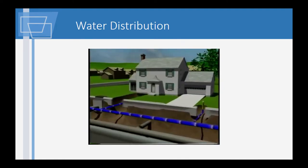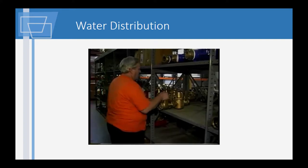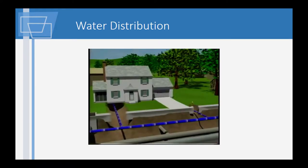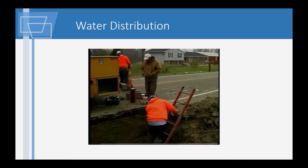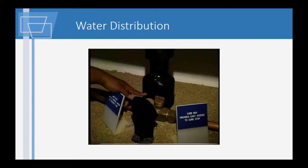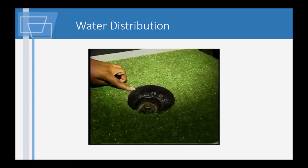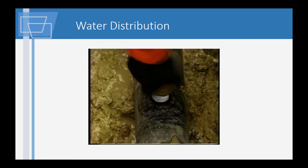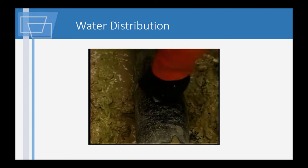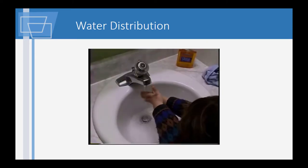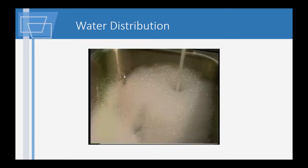Distribution mains are under every street, making drinking water available to all. Water flow is controlled throughout the system with water main line valves, which allow water to be shut off from the rest of the system when an emergency arises. Water moves from the water mains into water service lines. The city installs a water tap connecting the service line from the water main to the property line where a curb stop is installed. The city is responsible for the installation and maintenance of the water distribution system to the curb stop.